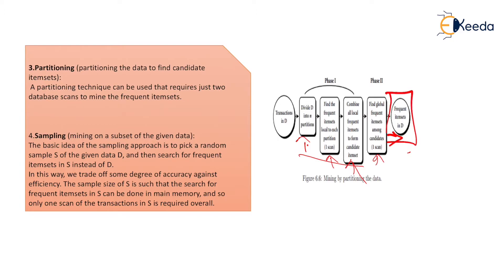The fourth technique is the sampling technique: mining on a subset of the given data. The basic idea of the sampling approach is to pick a random sample S of the given data D and then search for the frequent item sets in S instead of D. In this way, we trade off some degree of accuracy against efficiency. The sample size of S is such that the search for frequent items in S can be done in main memory, and so only one scan of the transactions in S is overall required.